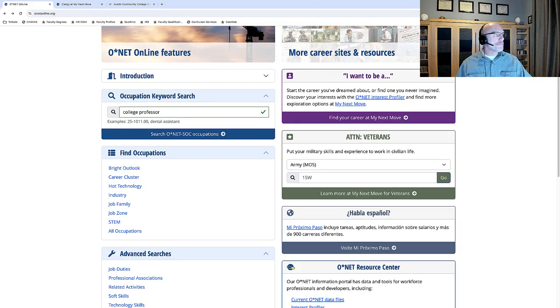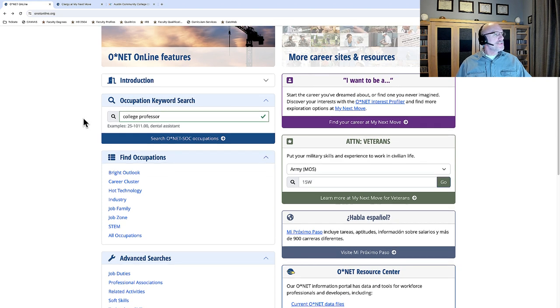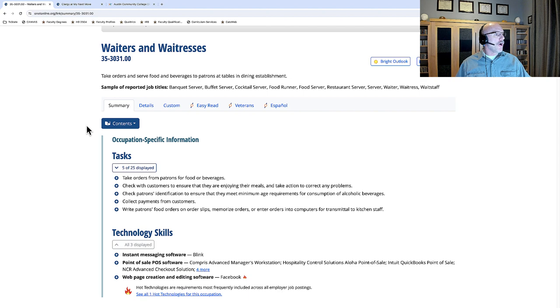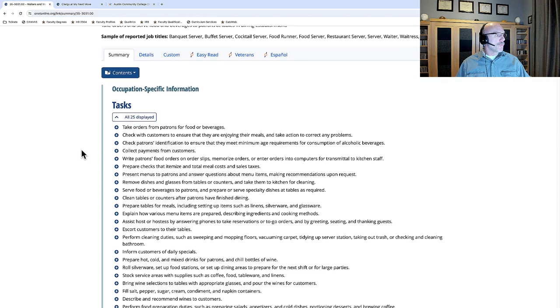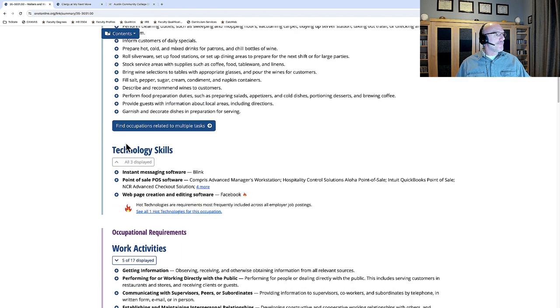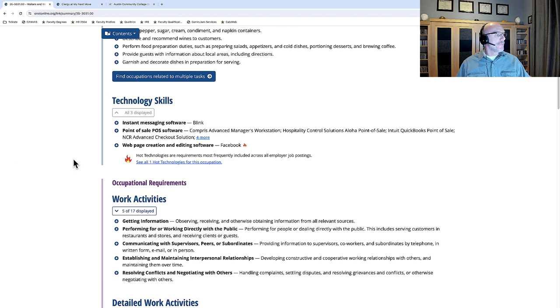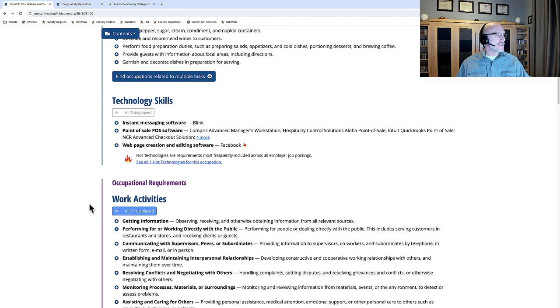Here we have the O-Net website. There is a plethora of valuable information for job analysts, business owners, and job seekers. Let's take a look at the job of waiter. When we put that into the Occupation Keyword Search box, we come up with a long list of occupation-specific information. We have tasks—there are 25 different tasks. We have the technology skills, all three of them: instant messaging software like Blink, point-of-sale software critical to the performance of a food server, and the work activities. Here are five of 17. Let's see all 17. Detailed work activities.